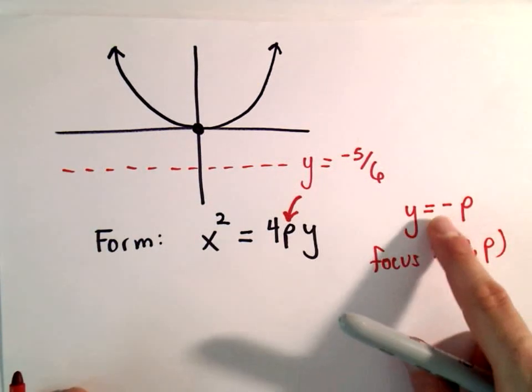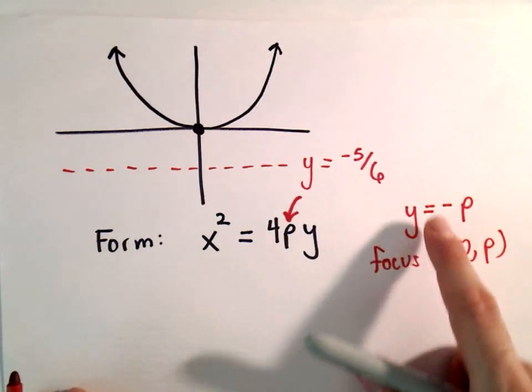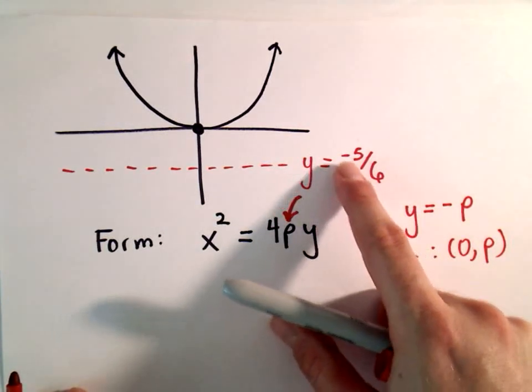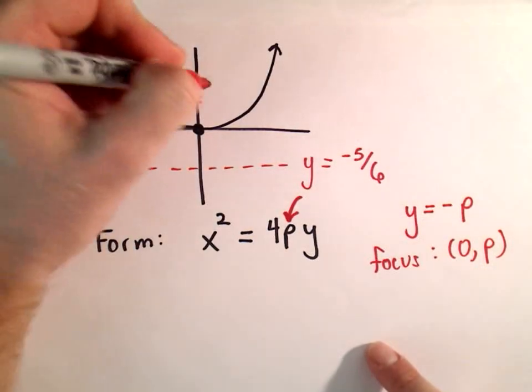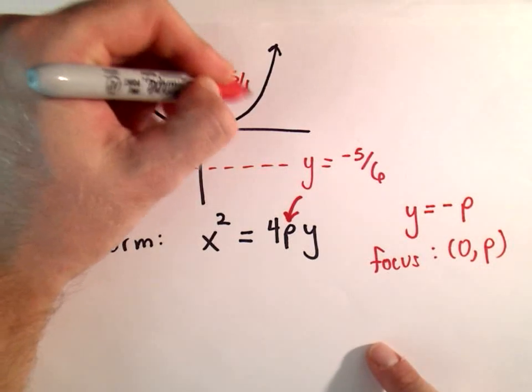Okay, so basically it says to get the focus, just take the opposite sign. So we've got negative 5 over 6, so our p-value would just be 5 over 6. So that tells us our focus is at 0, 5 sixths.